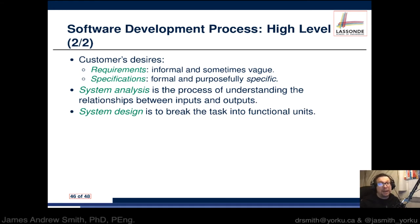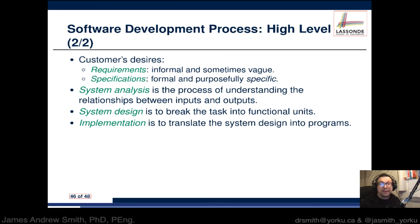Then you have system design. Here you want to break up the task into functional units. This is one of the places where object-oriented design really shines, because these functional units and the testing that can go along with them — using something like JUnit — can be very powerful and is a standard approach used in industry. Then you have implementation: the translation of the system design into programs. Those functional units become blocks inside your programs — objects, for instance — within your program.